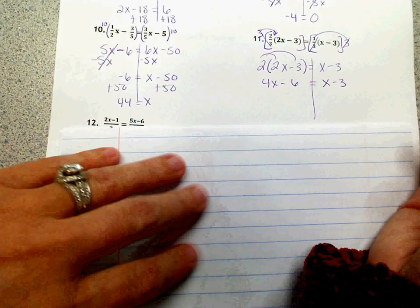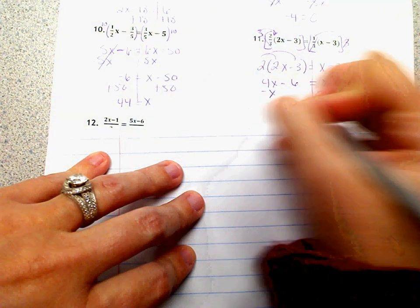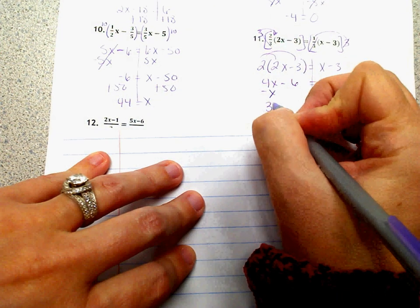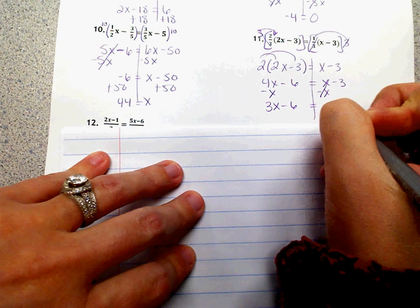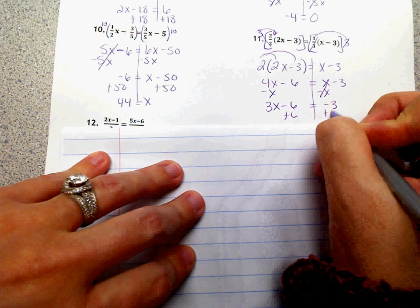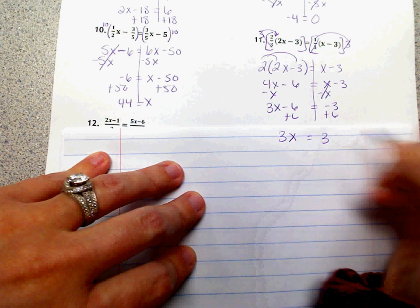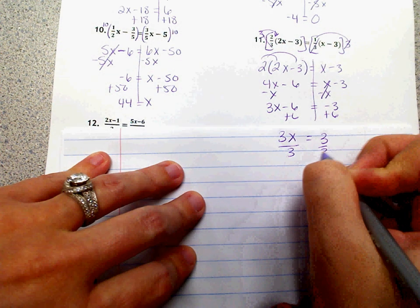So x is smaller, so I'm going to subtract x. So that gives me 3x minus 6 equals negative 3, and I'm going to add 6. So 3x equals positive 3, and divide by 3, so x equals 1.